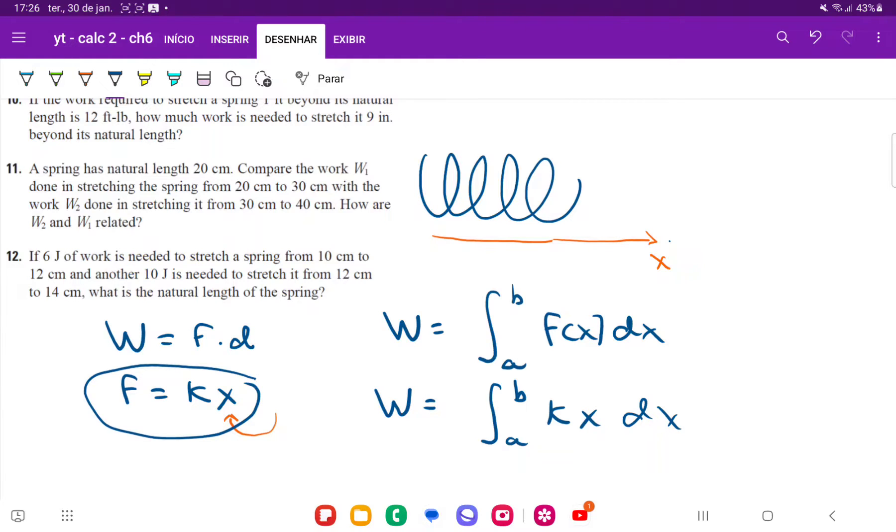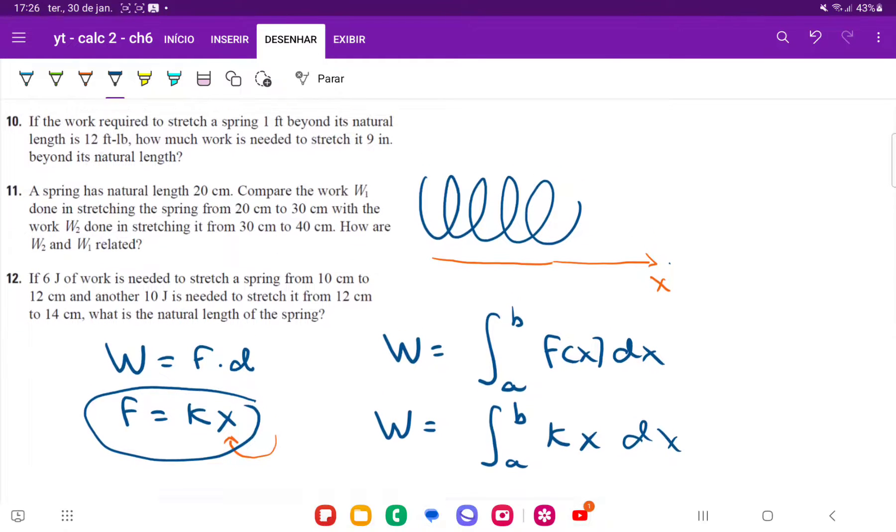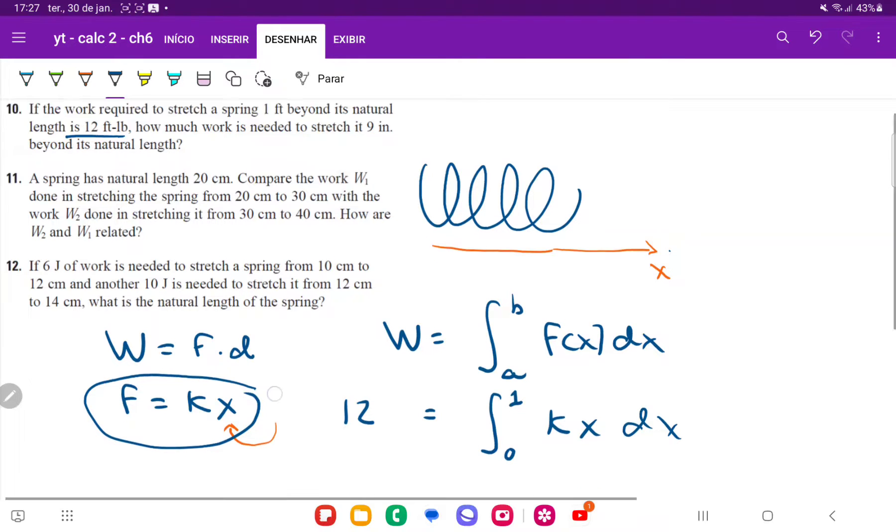So once we have this, what are we given here? Well, we're given that the work is 12 feet times pound, required to stretch a spring one foot beyond its natural length. So our boundaries here are going to be zero because it begins in its natural length zero where there's no stretch, going all the way up to one foot. So from zero to one of k times x dx.